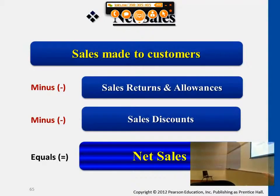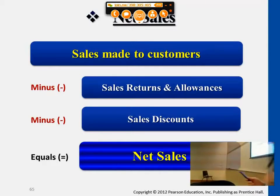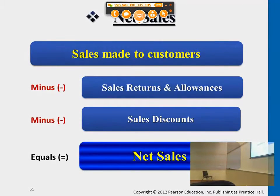But if customers return a part of the goods to you, you need to reduce that amount under sales returns and allowances. And if they do pay within a discount period, then you also need to reduce any discounts that you offered them. So overall, the net sales revenue would be the original sales revenue, subtracting returns and subtracting any discounts — that would really be the cash you'll be getting, the net sales amount.